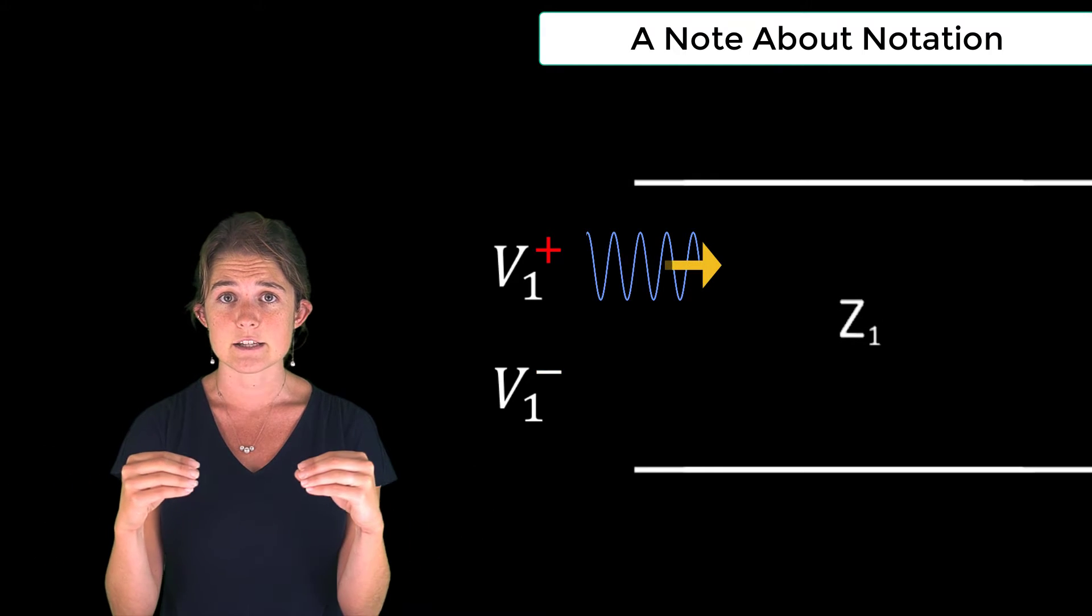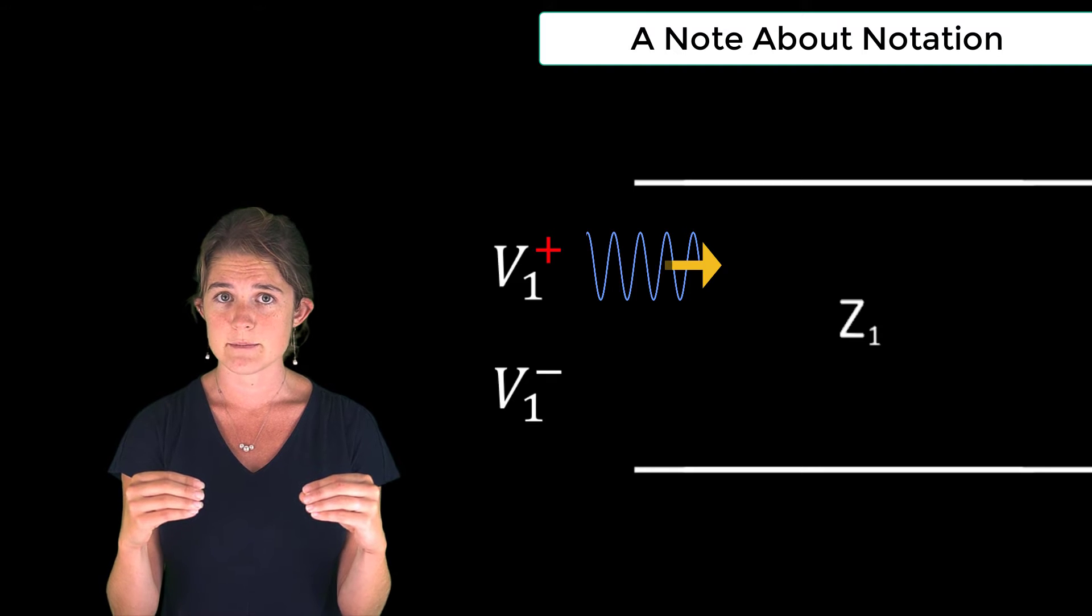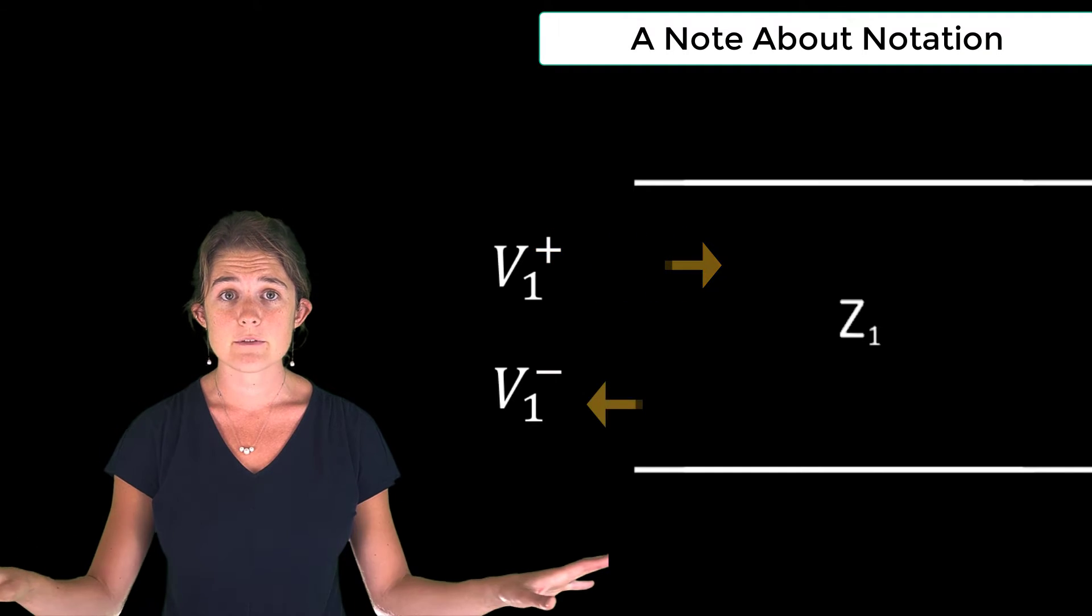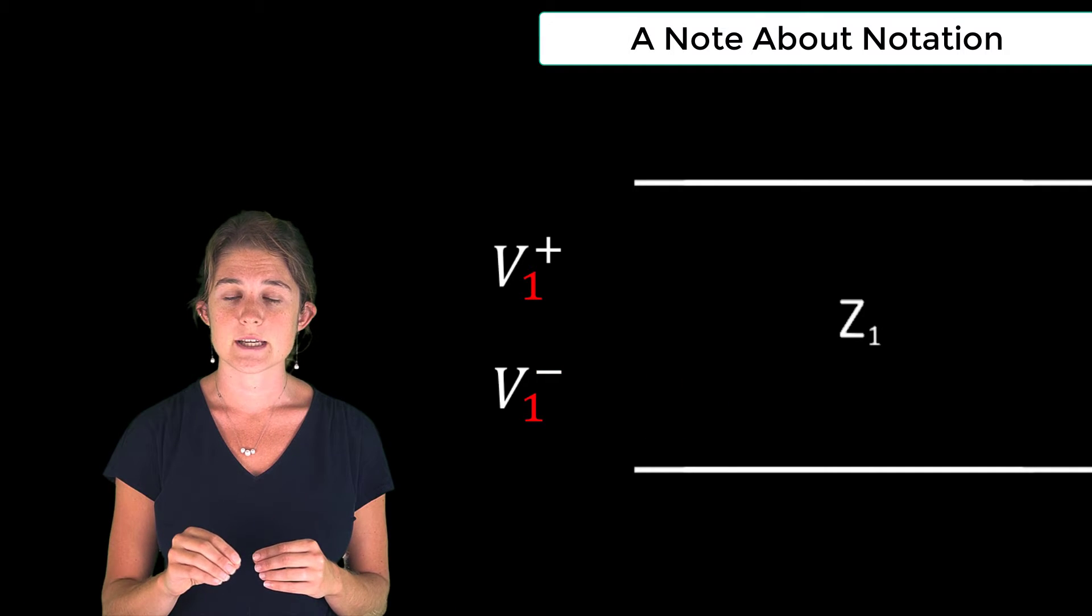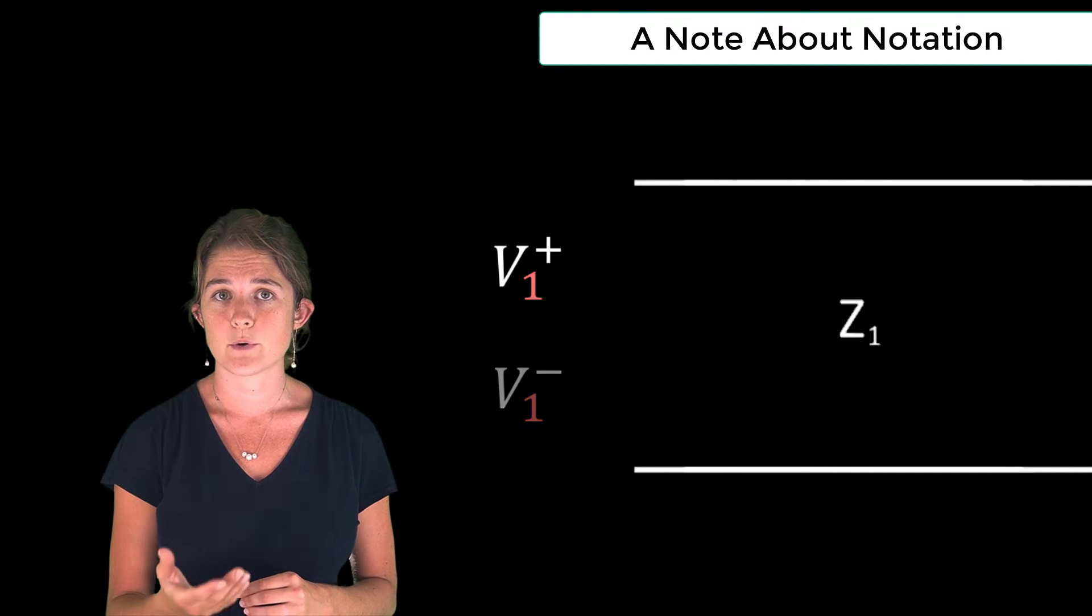If the wave is traveling into the system, I'm using a plus superscript. If the wave is traveling out of the system, I use a minus superscript. The subscript on the voltage indicates the relevant port for that wave.